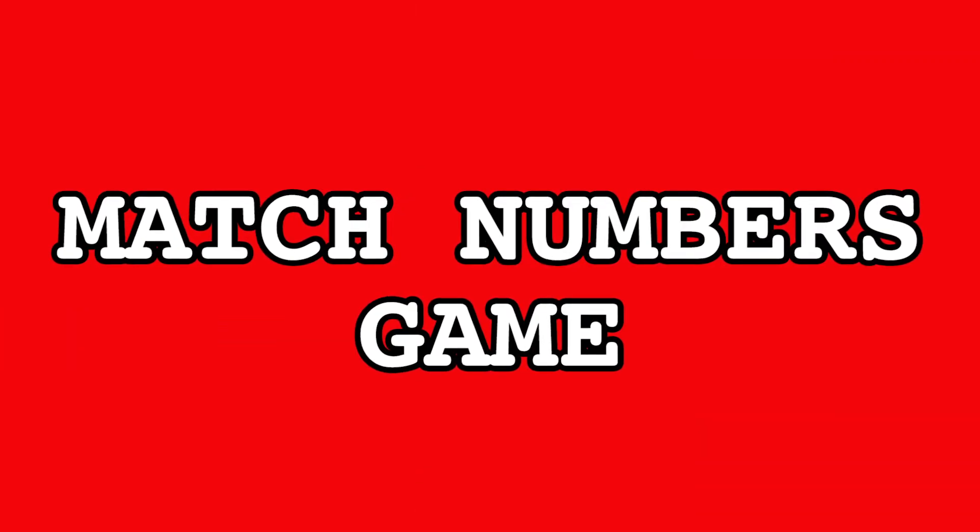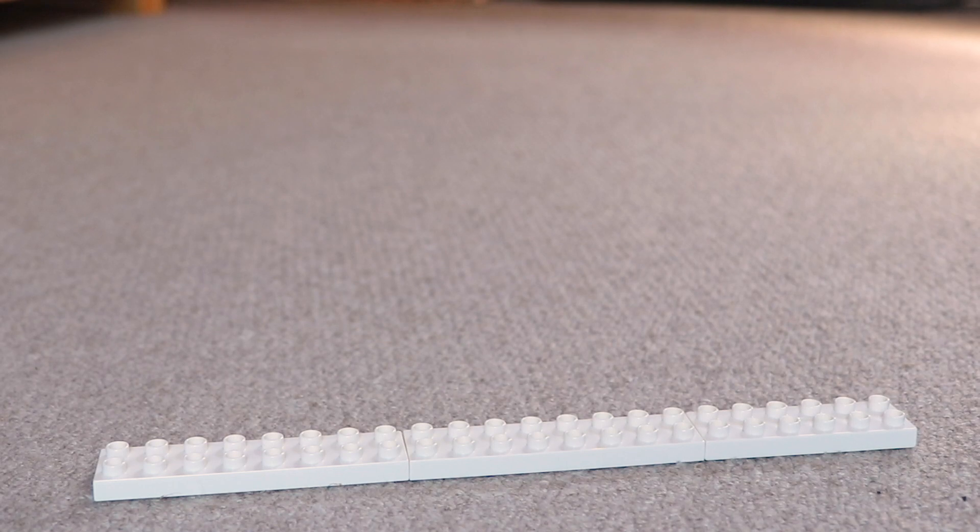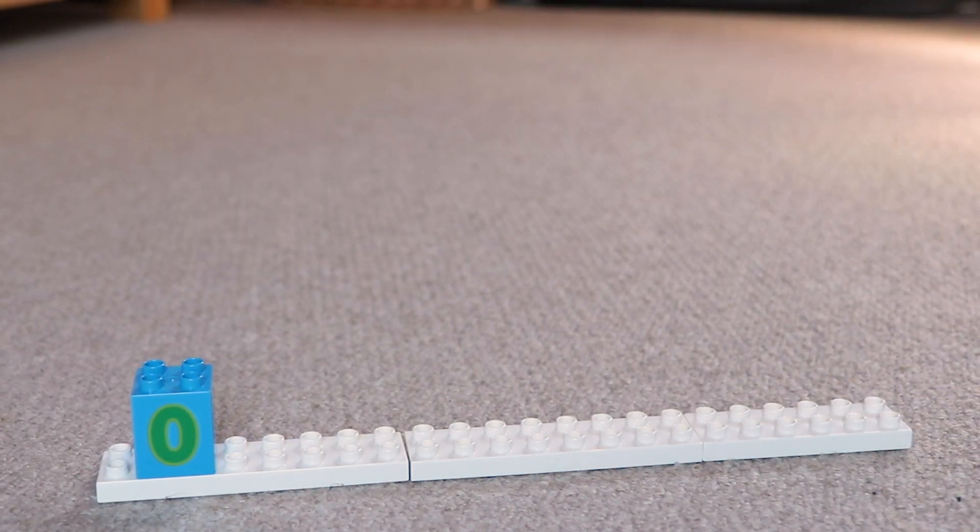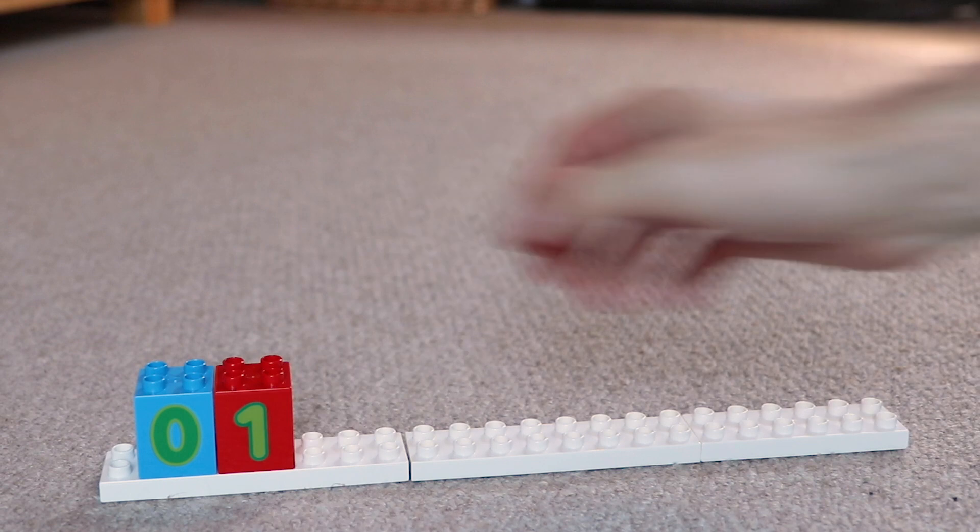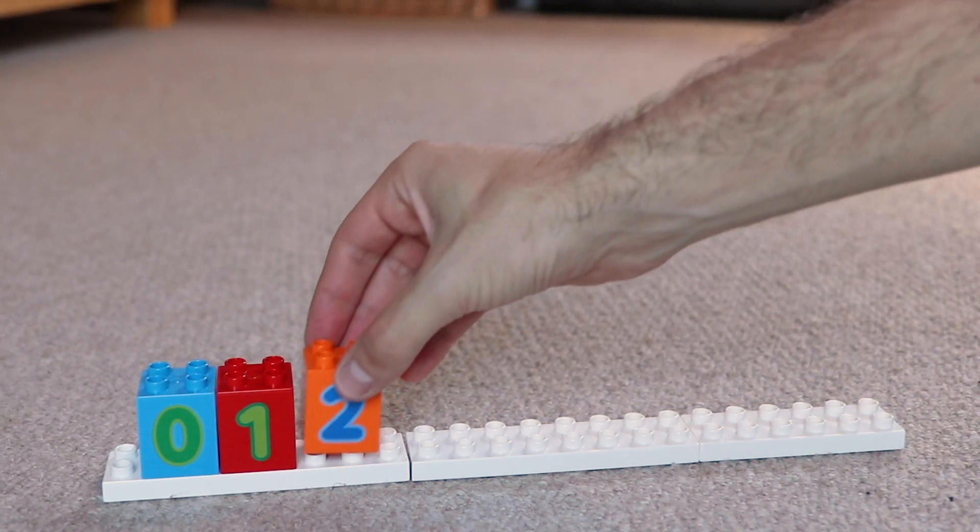First, here's how to play a match the numbers game. The aim of the game is to match up the corresponding number and color of Duplo bricks to the numbers we're lining up at the bottom.